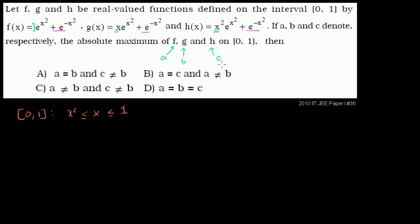So over the interval, we know that h(x) ≤ g(x) ≤ f(x). That comes straight from the fact that the coefficient x² is less than or equal to x, which is less than or equal to 1, over the interval. Now with that said, let's actually try to figure out the maximum value.